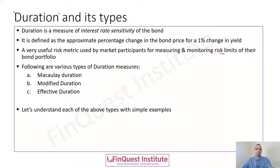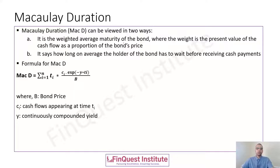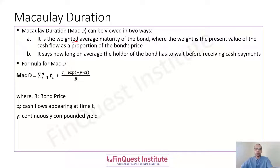Now a few types of durations — we start with Macaulay duration. There are two viewpoints to understand it. First, it is called the weighted average maturity of the bond, where the weight is defined as the present value of each cash flow as a proportion of the bond's price.